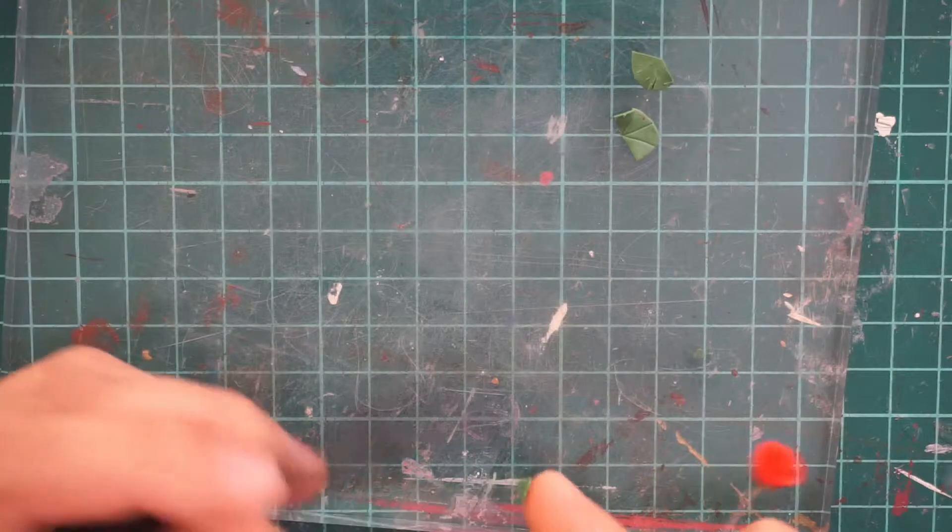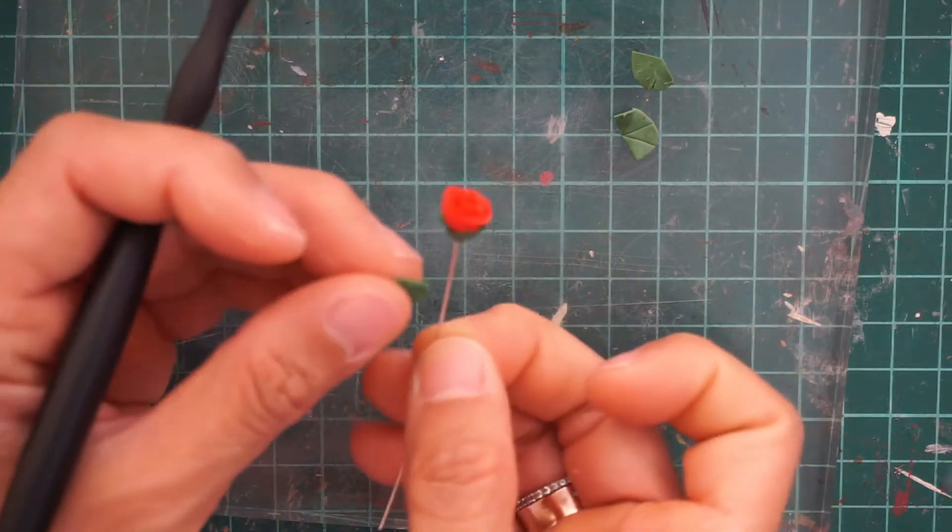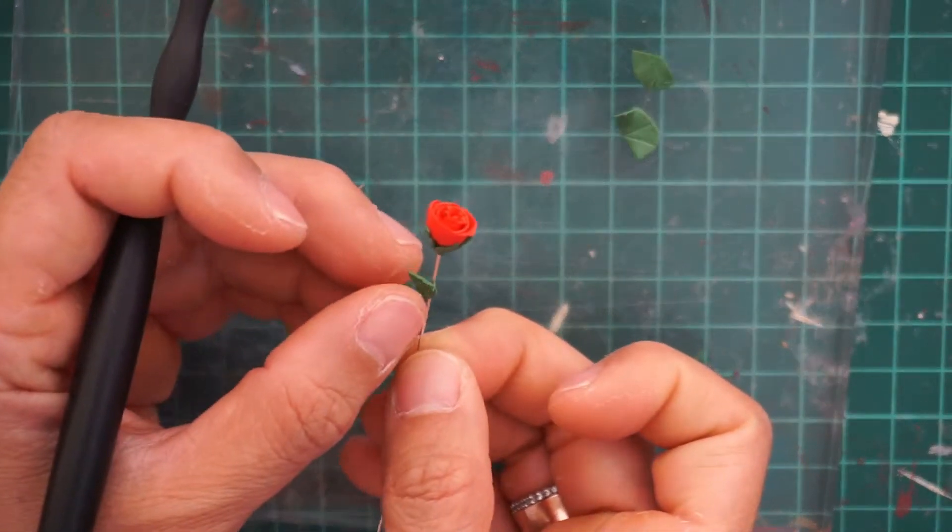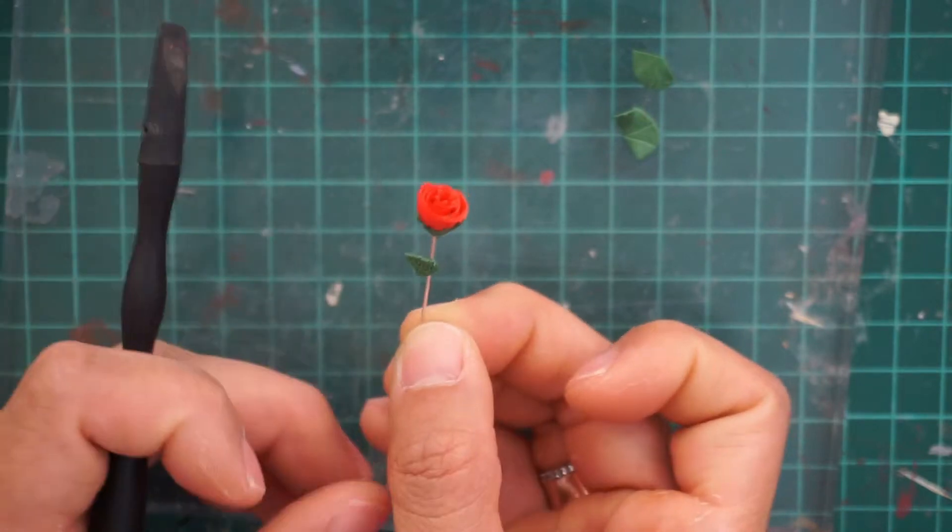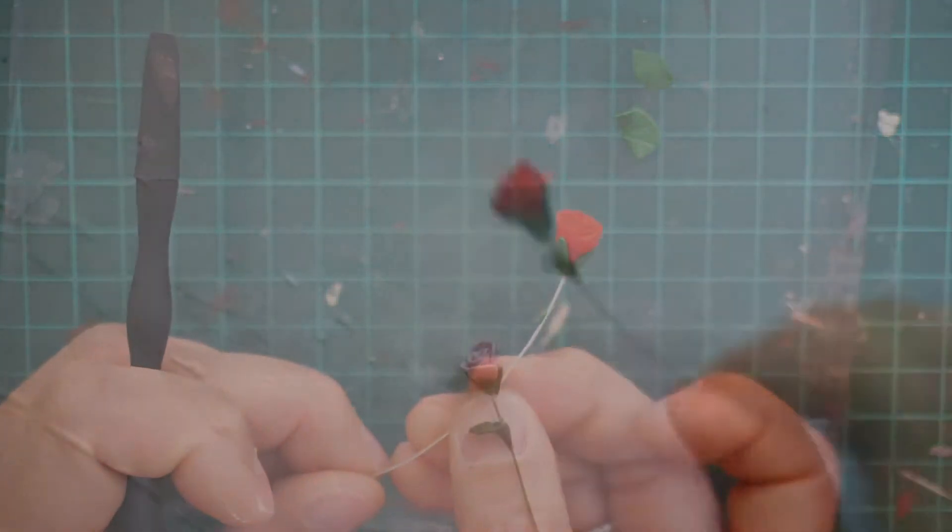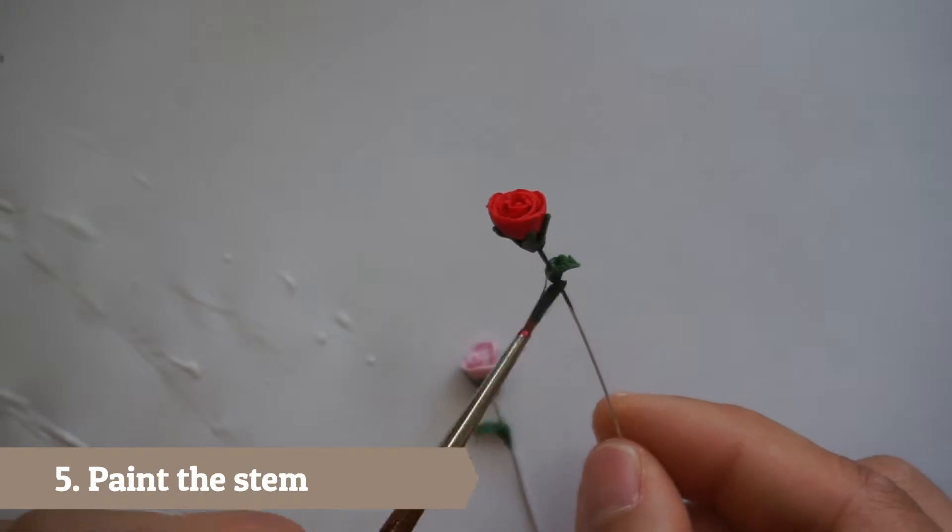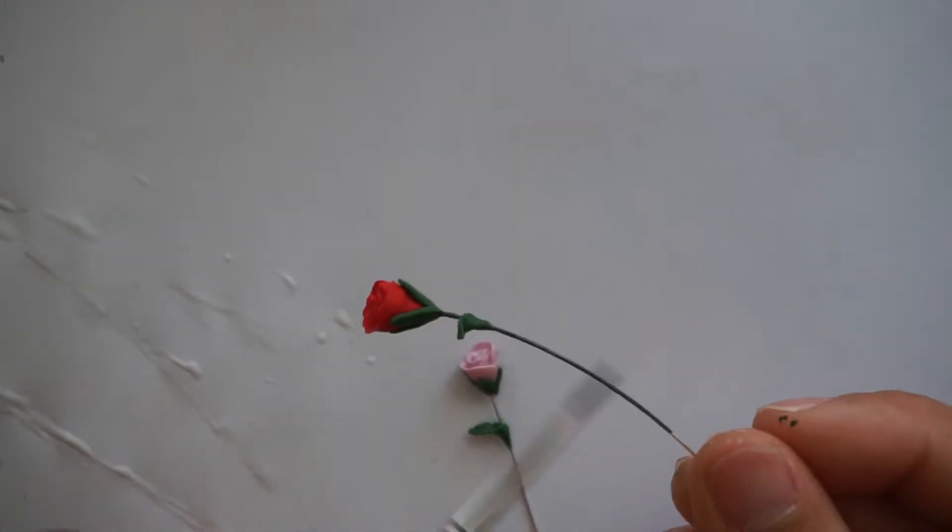Attach the leaf to the stem and add liquid clay or a small clay at the back so that it will be more stable. Then bake and let it cool. After baking, paint the stem with green paint.